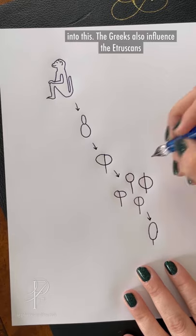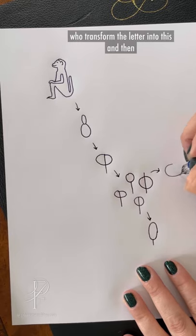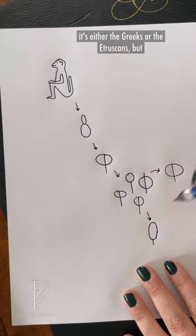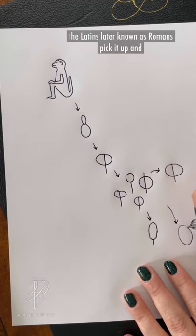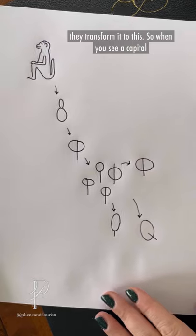The Greeks also influence the Etruscans, who transform the letter into this. And then it's either the Greeks or the Etruscans, but the Latins, later known as Romans, pick it up and they transform it to this.